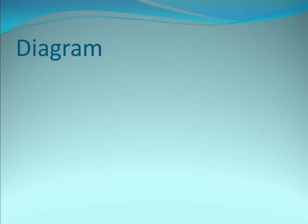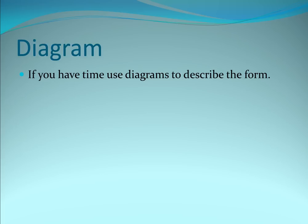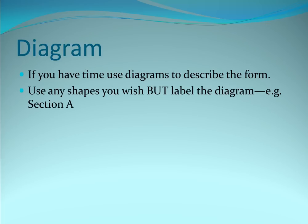And lastly, you have diagram. Now it's really important, you should have time to actually write a diagram and do that. So if you have time, use diagrams to describe the form. Use any shapes you wish, but you need to label the diagram. In other words, section A. So for example, this triangle might be section A. And if you want to on your page, you might want to actually say that the instruments in section A are X, Y, Z.